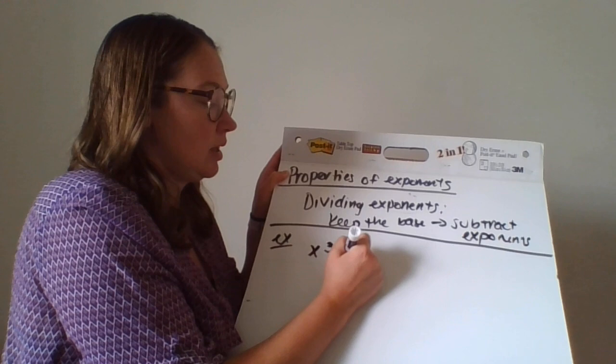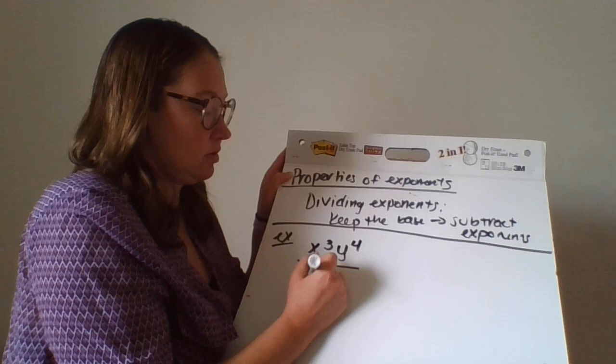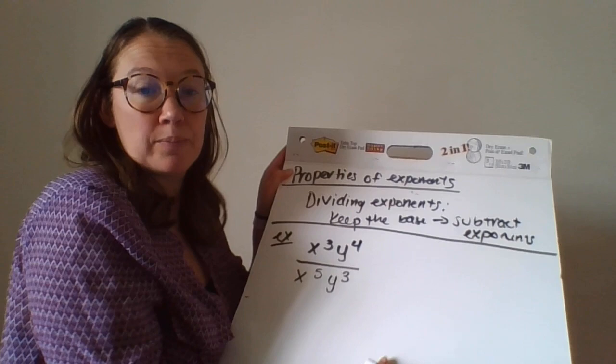So if I have a division problem, let's say it's x to the third, y to the fourth and I'm dividing that by x to the fifth and y to the third.